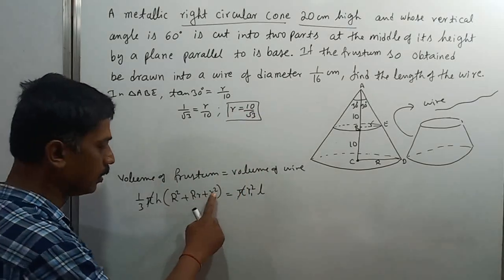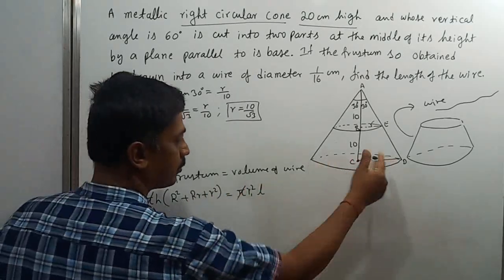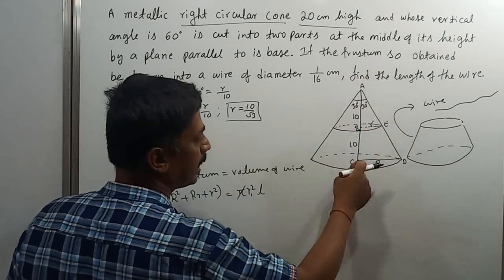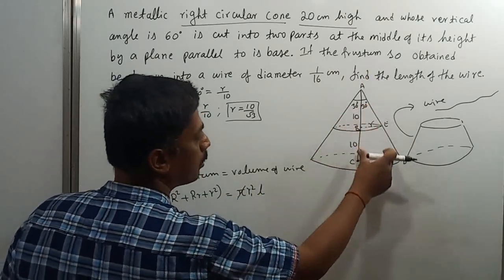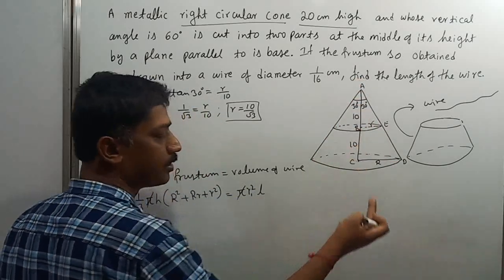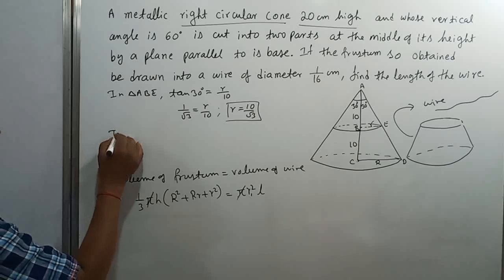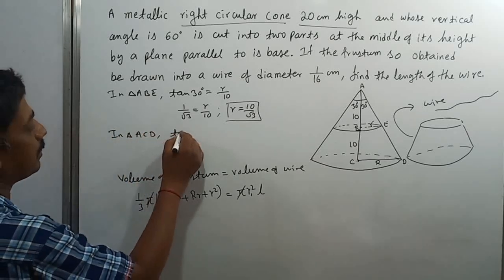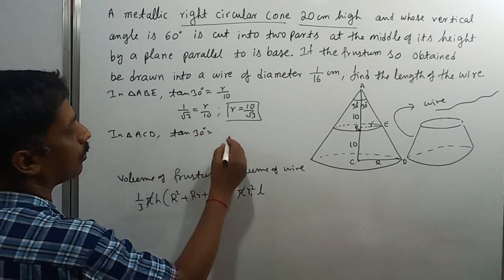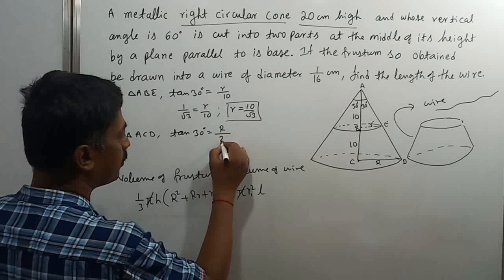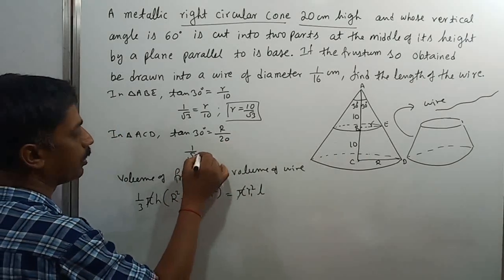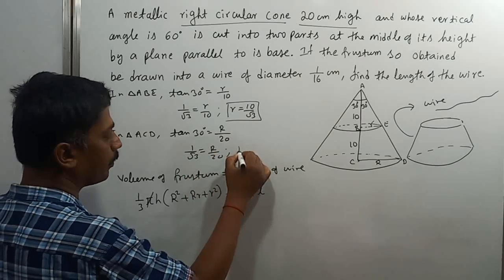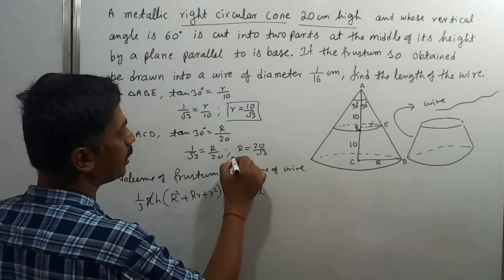Now we got the smaller radius. Let's find the bigger radius. Apply the same trigonometric ratio to triangle ACD. In this triangle, the angle is 30 degrees, the adjacent side is 20. So tan 30° = R/20, giving 1/√3 = R/20, therefore R = 20/√3 centimeters.